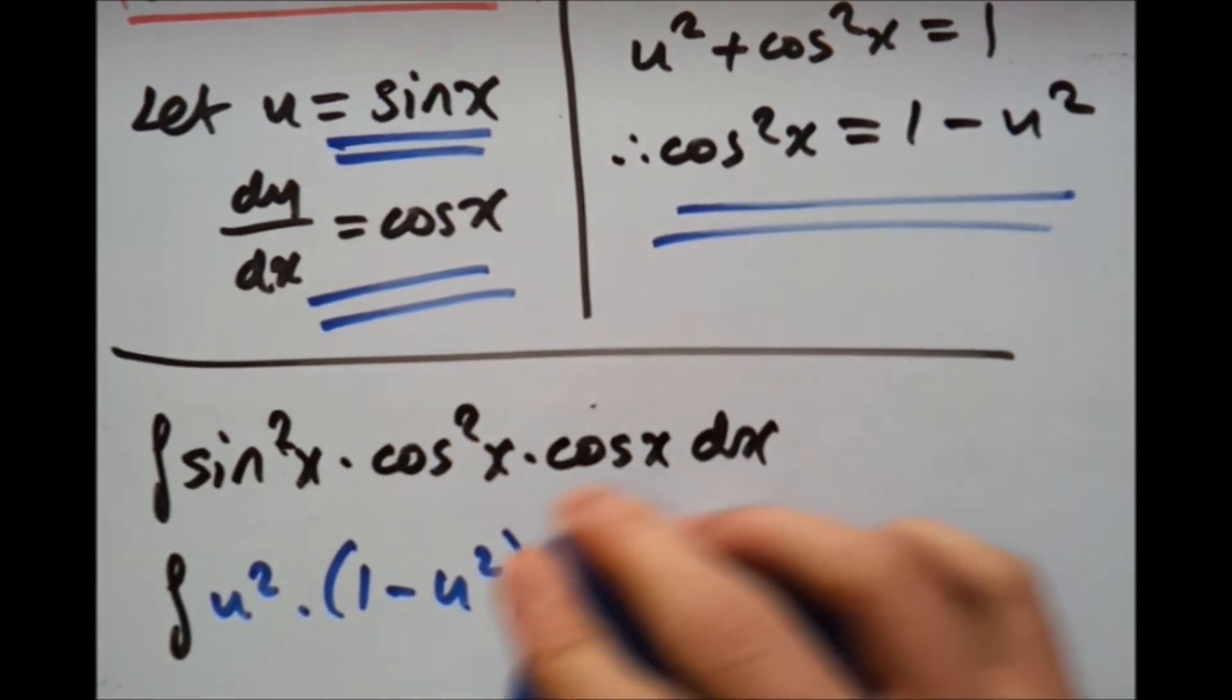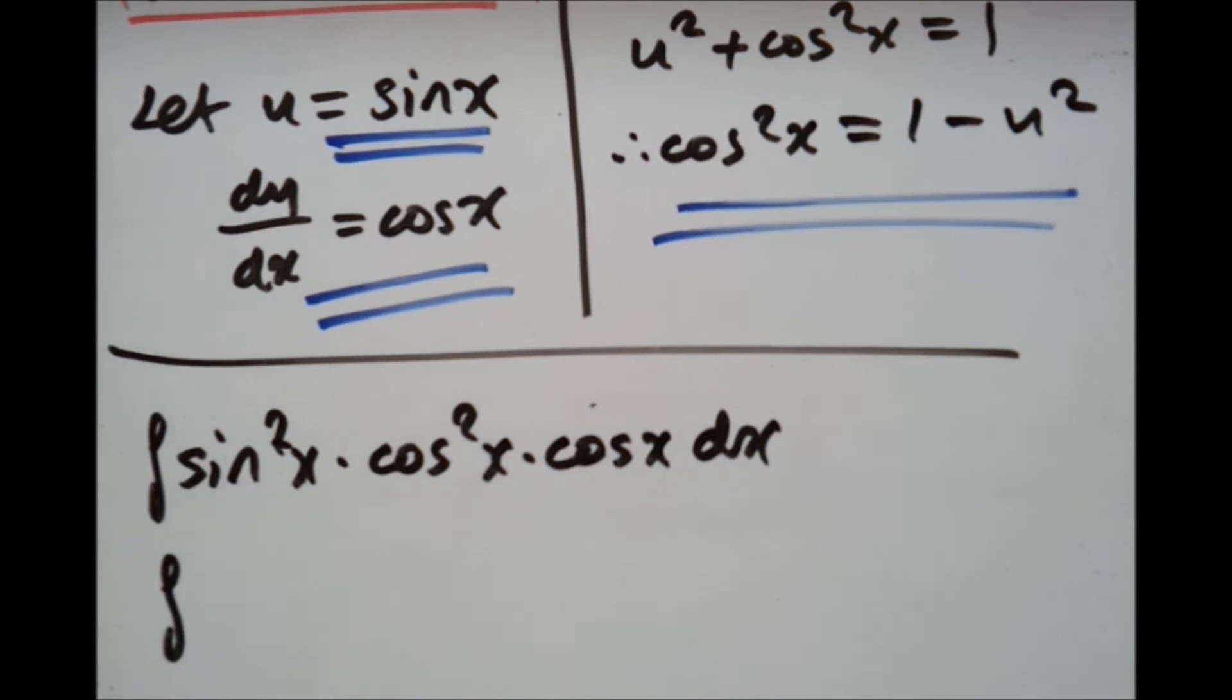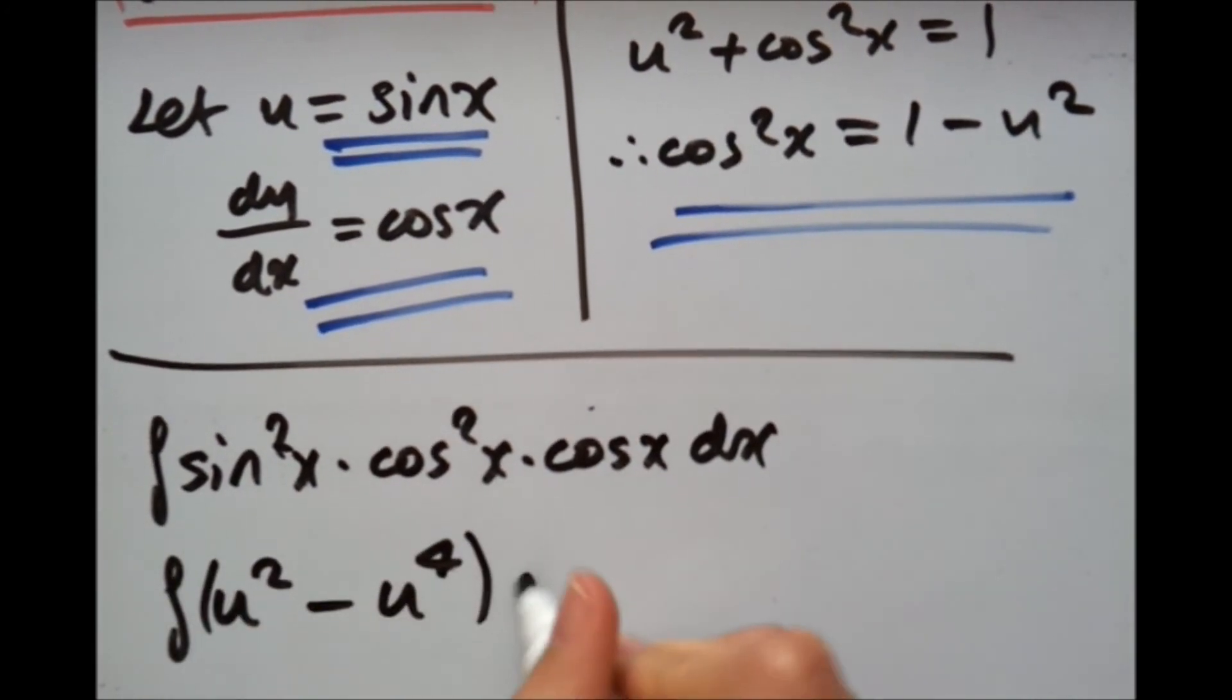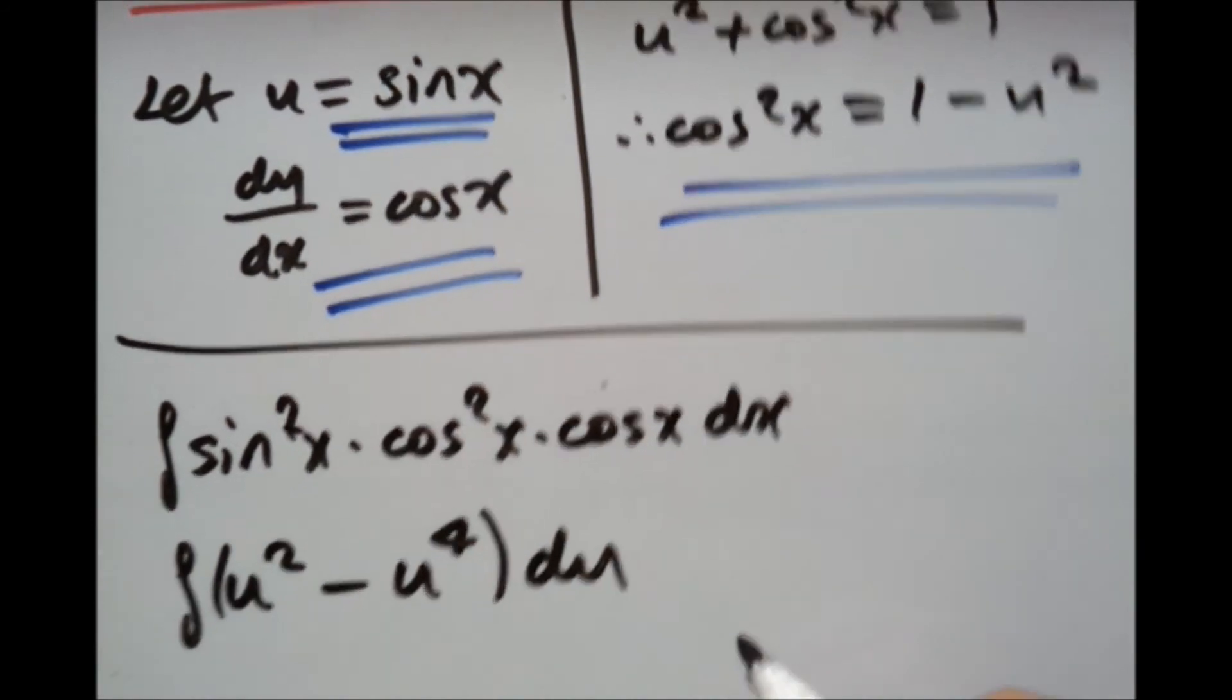So if we're going to expand this, we would get U squared minus U to the power of 4 with respect to du. Integrate that, we get U cubed over 3 minus U5 over 5 plus C.